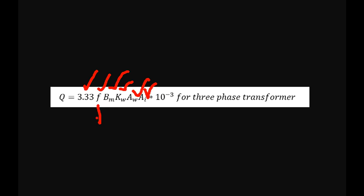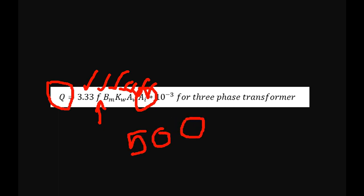For a 3-phase transformer, Q equals 3.33 into frequency into flux density into window factor into window area — these are the important design parameters. When we raise the frequency, we need to maintain the constants and understand the total iron area. A-sub-W is the core window area. The key concept is that by increasing frequency 10 times, we can reduce the core area by 10 times. That is the basic concept.